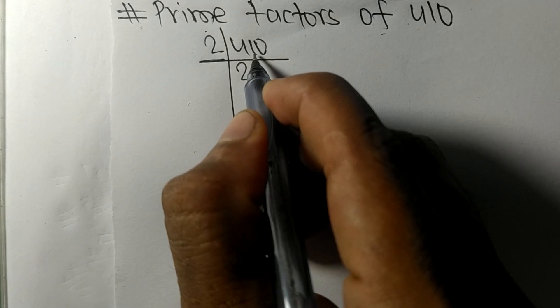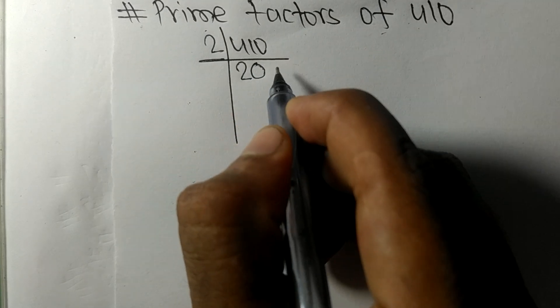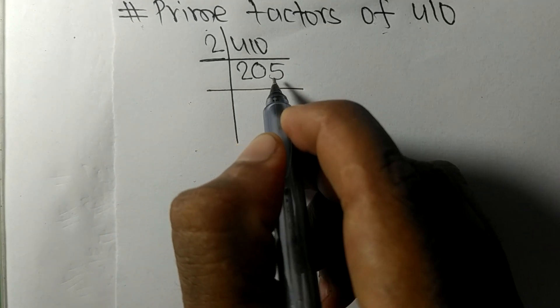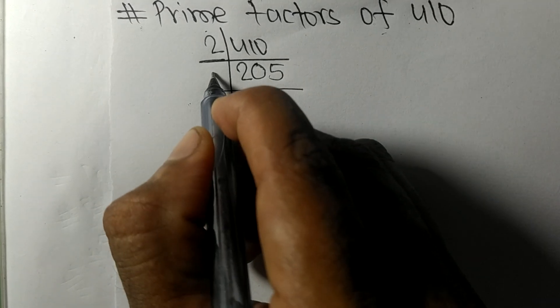Remainder 1, so we have 10. 2 times 5 means 10. Now we got 205, which is divisible.